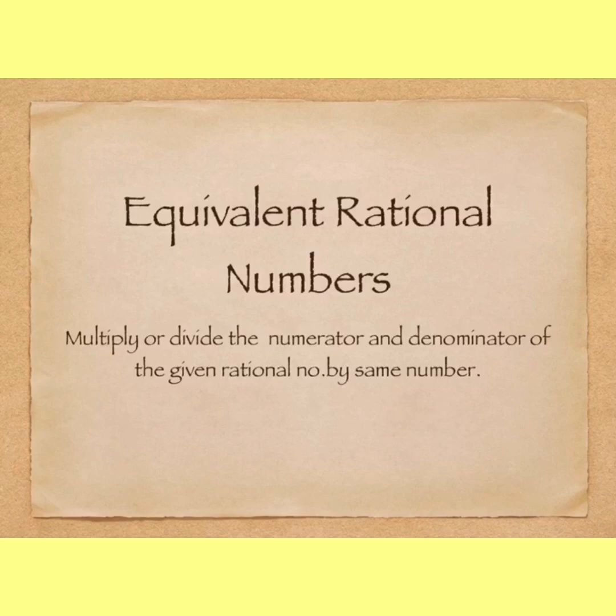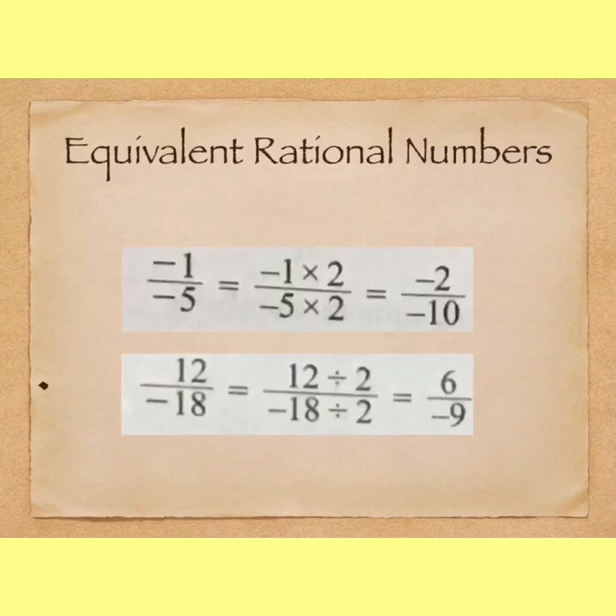Then you will get equivalent rational numbers. For example, if you multiply -1/-5 with 2, then you will get -2/-10. And divide 12/-18 by 2, then you will get 6/-9.